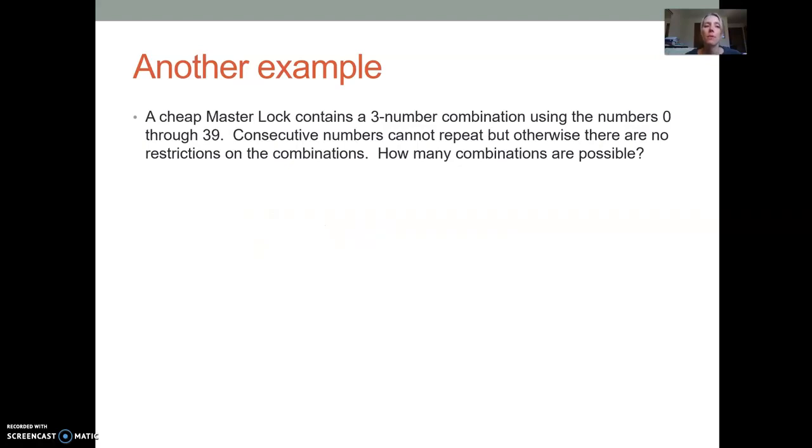In another example, so if you have a cheap master lock, one way in which they're made is they have a three digit combination. And the three digit combination uses the numbers zero through 39. For master locks, consecutive numbers cannot repeat, but otherwise there are no restrictions. So this may be a good time to talk about restrictions. Sometimes when things are dependent on the previous thing, so the second thing to happen is dependent on the first thing to happen, we might have restrictions on what that second thing can be. And so with this master lock, it's saying there is a restriction because consecutive numbers cannot repeat. So that means if the first number in the combination is one, the second one cannot also be one. It can be anything but one.